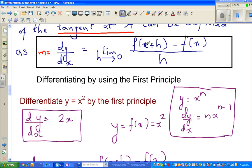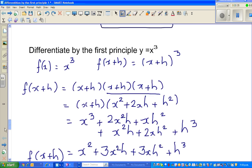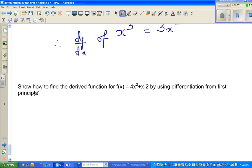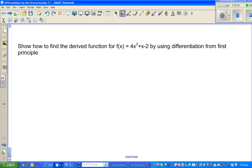Where f of x plus h minus f of x over h. So using the same principle, the question is show how to find the derived function. They are talking about dy by dx. They are asking how you can find dy by dx for the function f of x equals 4x squared plus x minus 2 by using differentiation from the first principle.